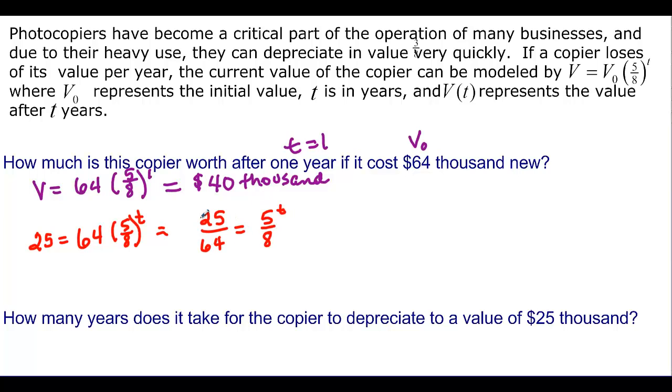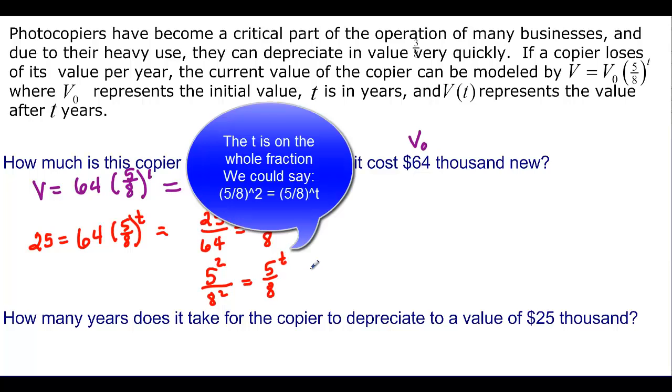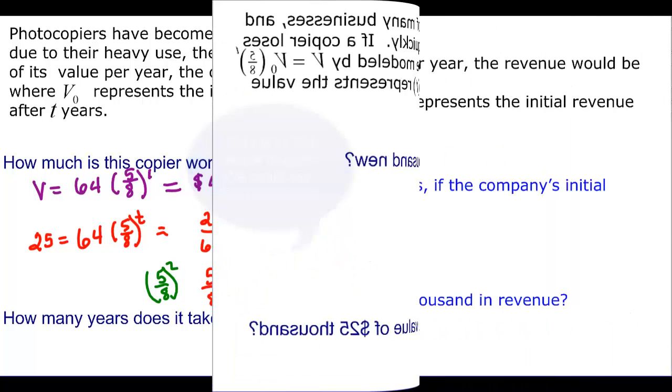And it looks like we can get the same bases here. So this would be 5 squared over 8 squared is equal to 5 over 8 to the T, which is really going to just be 2 equal T. Because this one would really be 5 over 8 squared. It would be the same thing as 5 squared over 8 squared. So T is equal to 2.